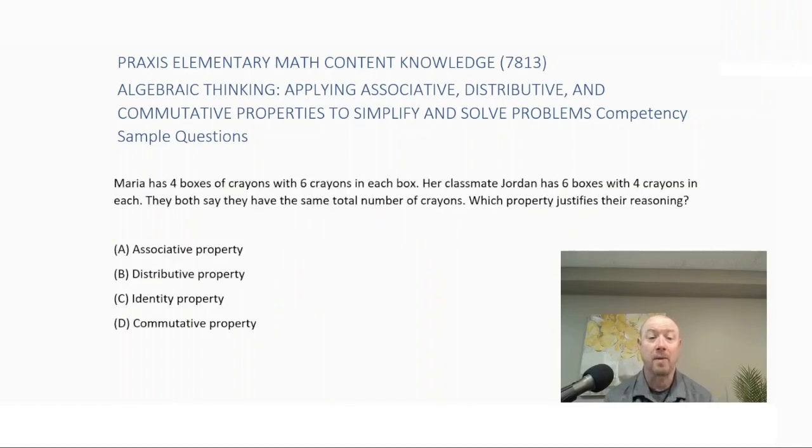Maria has 4 boxes of crayons with 6 crayons in each box. Her classmate Jordan has 6 boxes with 4 crayons in each box. They both say they have the same total number of crayons. Which property justifies their reasoning? Is it A, associative property, B, distributive property, C, identity property, or D, commutative property?